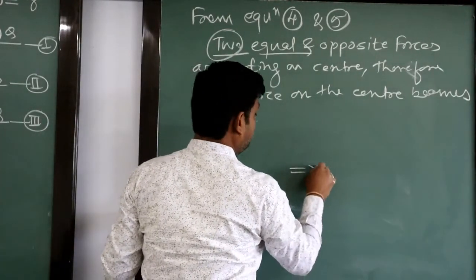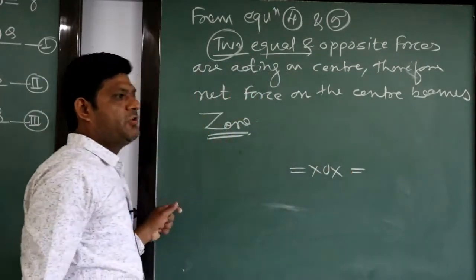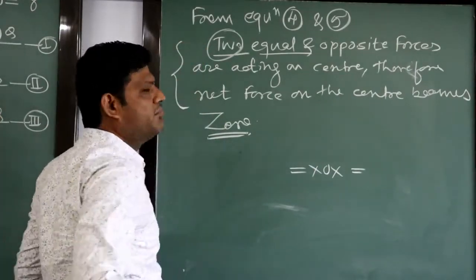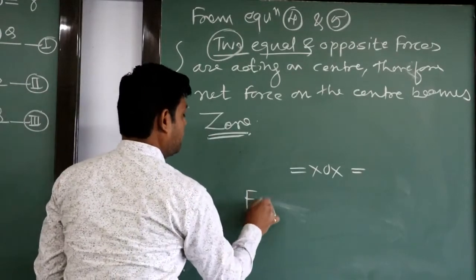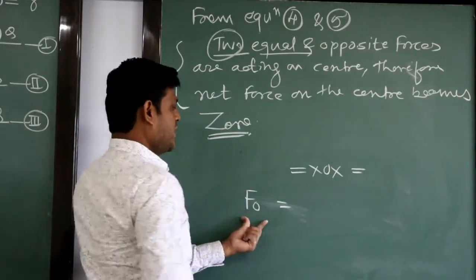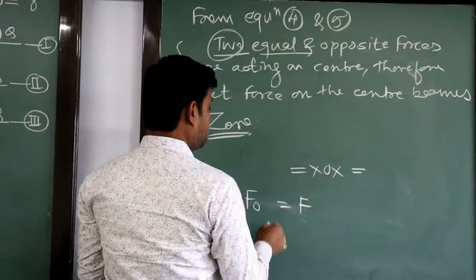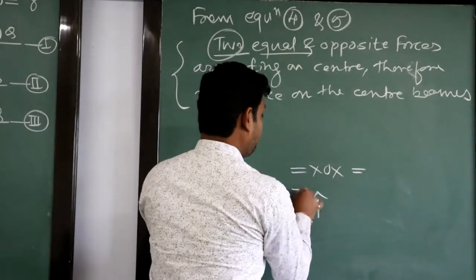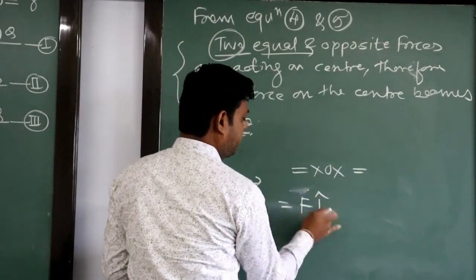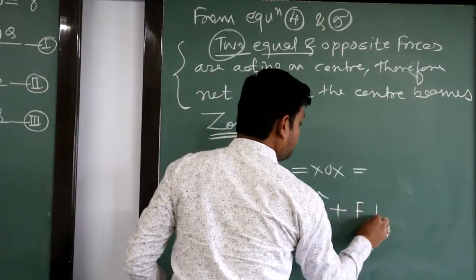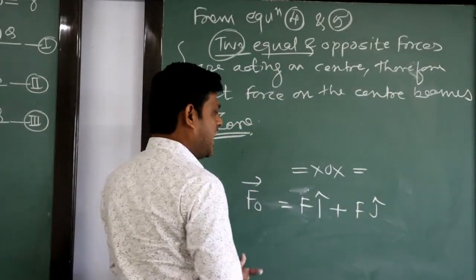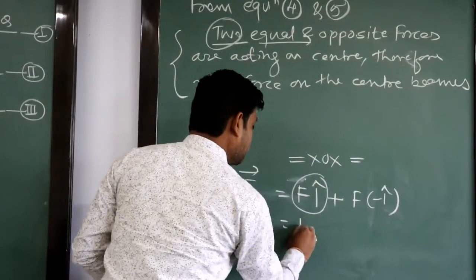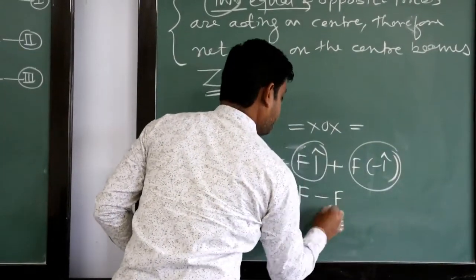Here ends the numerical. We can also write it mathematically: the net force acting on O is the upward force F in the î direction plus the downward force F in the −î direction, giving magnitude F − F = 0.